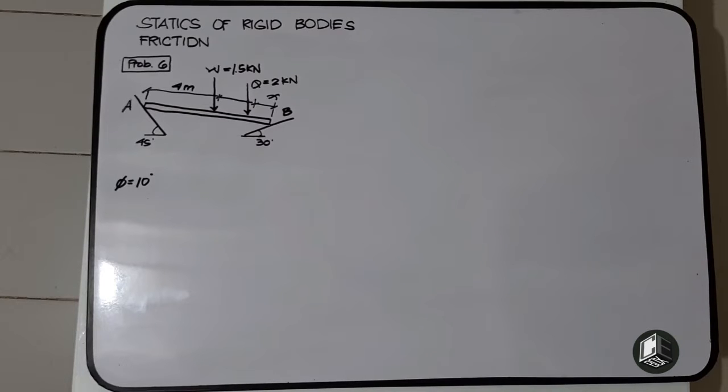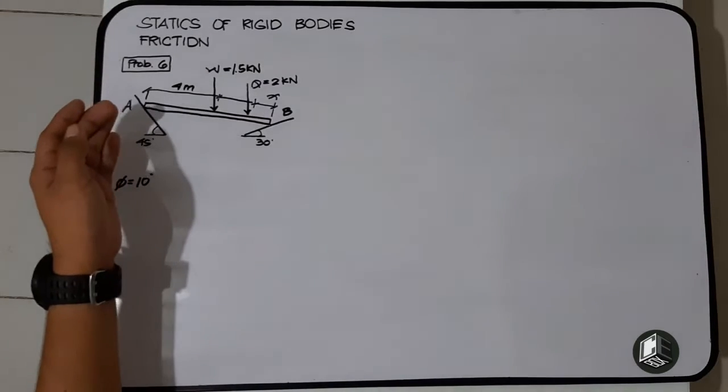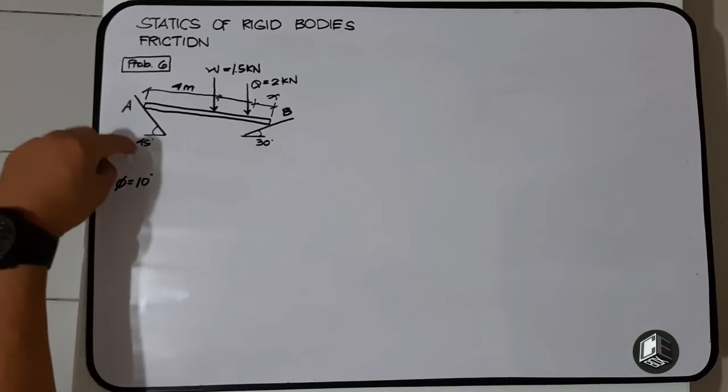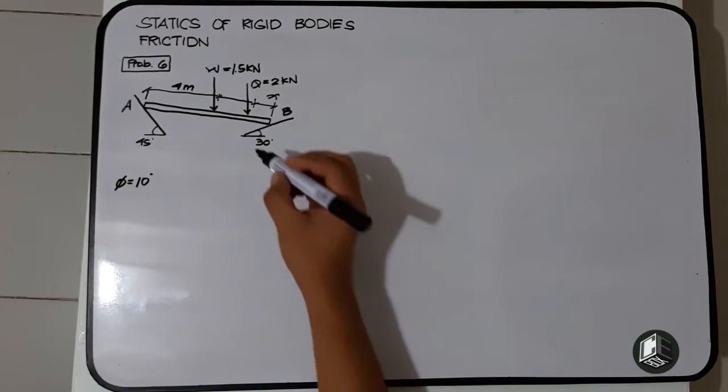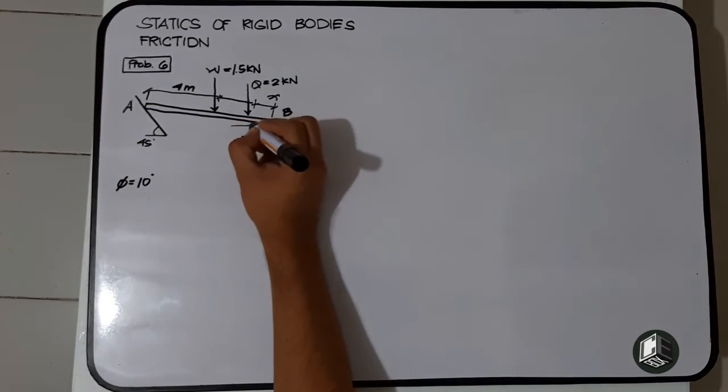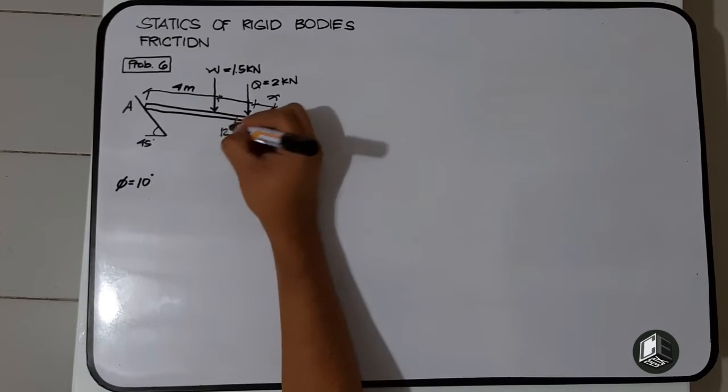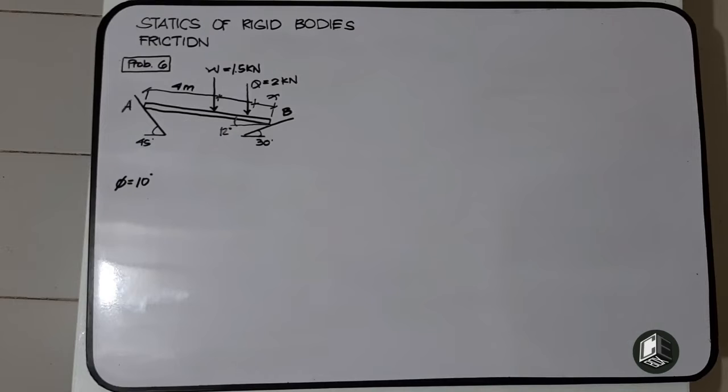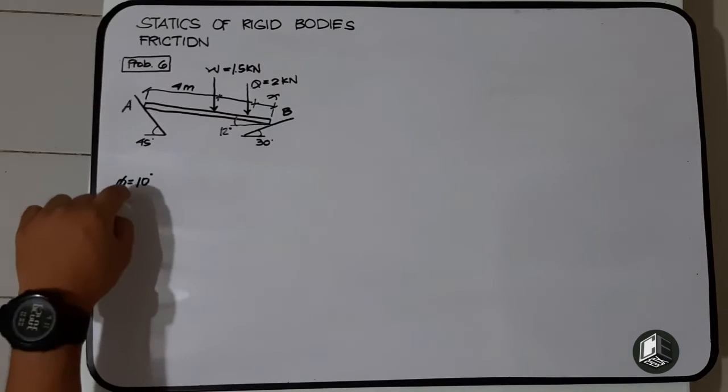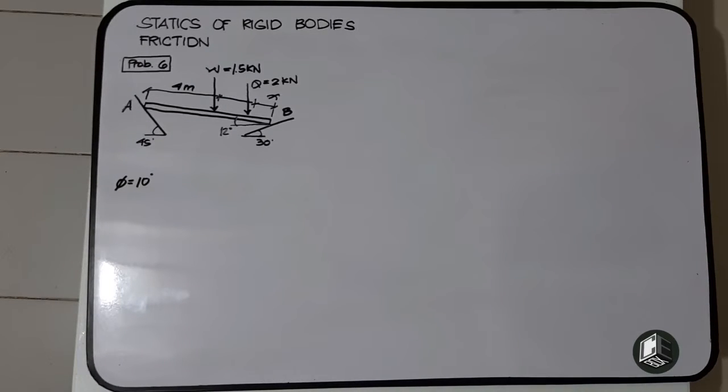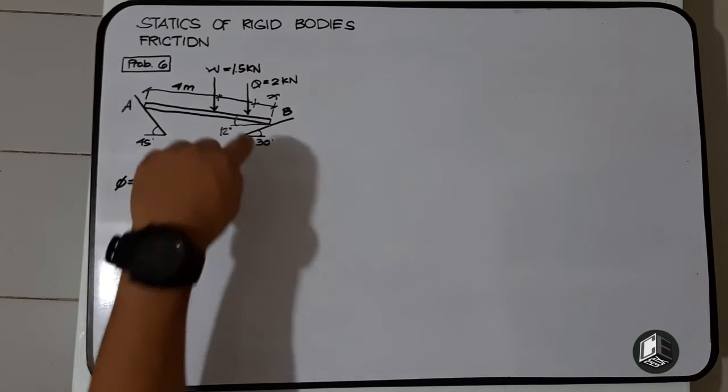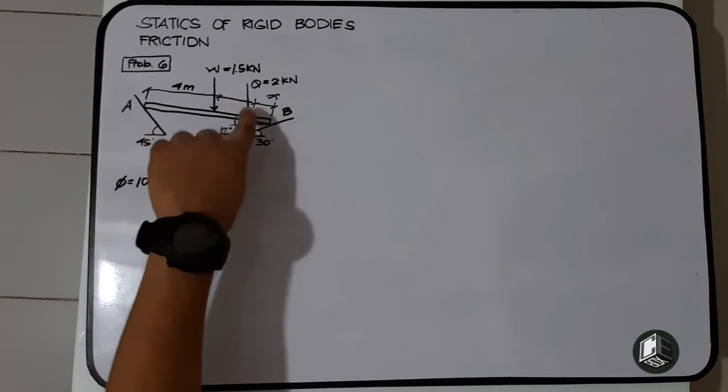So we have two incline supports at points A and B - this is 40 degrees and this is 30 degrees. The bar is at 12 degrees with the horizontal. The angle of friction is 10 degrees. We need to find where to place force Q at distance x from point B so the bar doesn't start to impend or move.